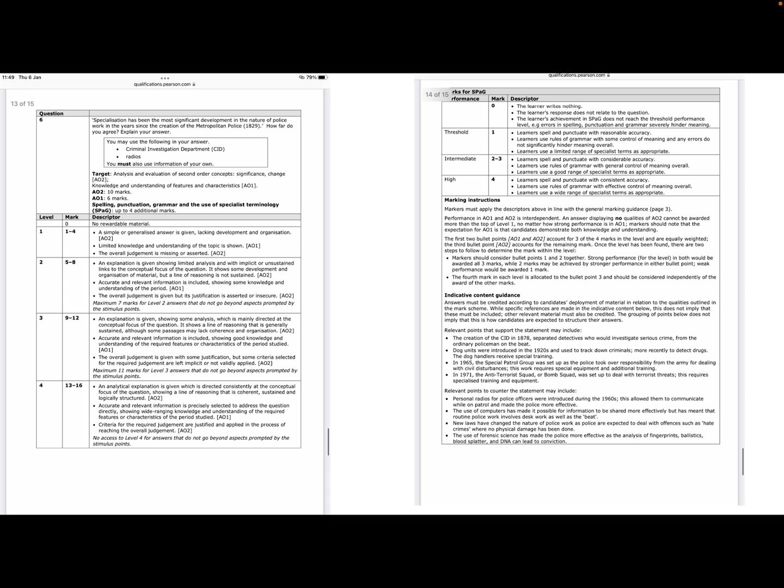Here, for the content, I'll just read that before we talk about the structure. The creation of CID in 1878 separated detectives who would investigate serious crimes from the ordinary policemen. Dog units are introduced in the 1920s, used to track down criminals, more recently to detect drugs. The dog handlers receive special training. In 1965, the special patrol group set up by the police took over responsibility from the army for dealing with civil disturbances. The work requires special equipment and additional training. And in 1971, the anti-terror squad or bomb squad is set up to deal with terrorist threats. This requires specialist training and equipment. Countering that, personal radios for police officers are introduced in the 1960s, which allows them to communicate while on patrol and makes policing more effective. The use of computers makes it possible for information to be shared effectively. And has meant that routine police work involves desk work as well as the beat. New laws have changed the nature of policing work as police are expected to deal with offences such as hate crimes where there's no physical damage been done. And use of forensic science has made the police more effective as the analysis of fingerprints, ballistics, blood splatter and DNA can lead to conviction.